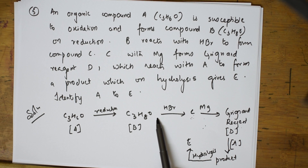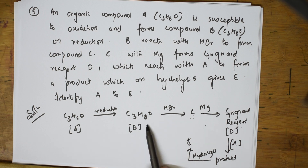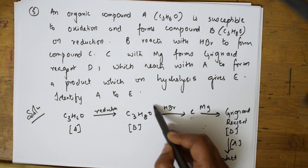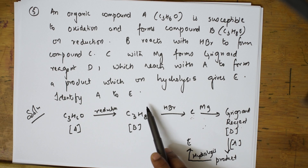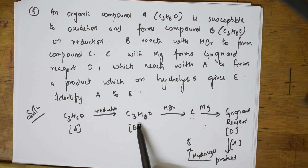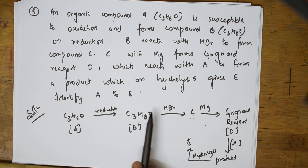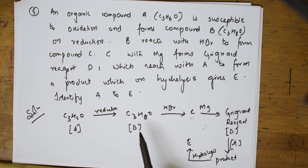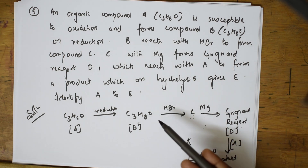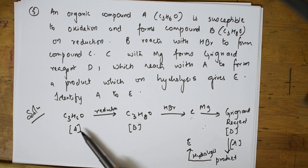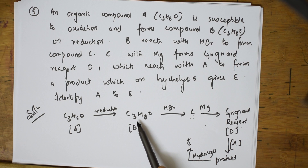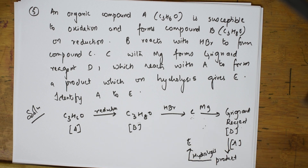So B must compulsorily be an alcohol. If it is an alcohol, HBr removes the OH and Br adds in to give an alkyl halide. Now remember: aldehydes on reduction give alcohols, and alcohols on oxidation give aldehydes; aldehydes on oxidation give acids. From these clues I can start solving. I have a clue from the Grignard stage, a clue from B being an alcohol, and a clue from the reduction step.